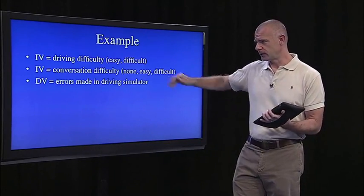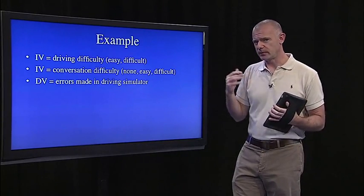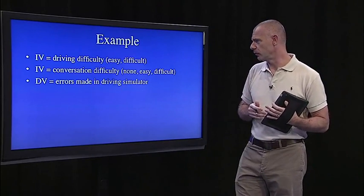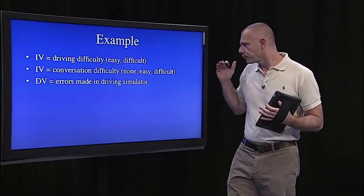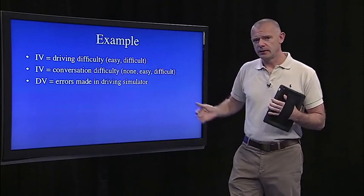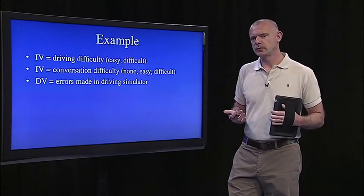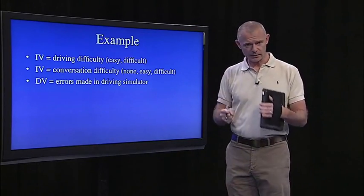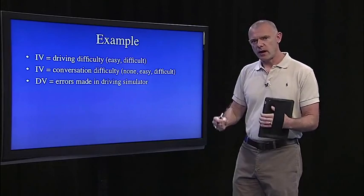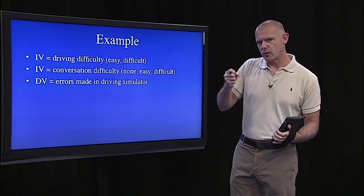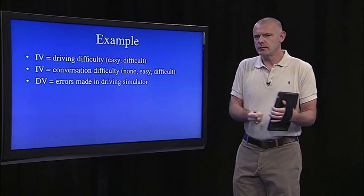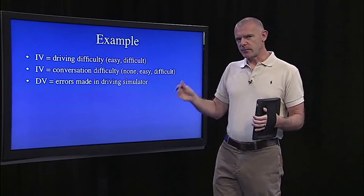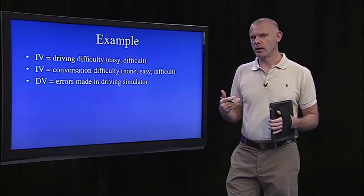This experiment is based on real research done by Strayer and Johnson in 2001. They manipulated the difficulty of the driving task. This was done at the University of Illinois in Urbana, where they have a driving simulator. They put people in the driving simulator and made the course either relatively easy or relatively difficult. What's really interesting is they manipulated the difficulty of the conversation as well, and it turns out that this is an important variable in this type of research.